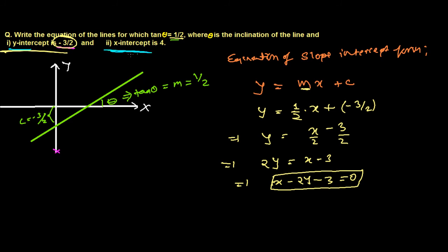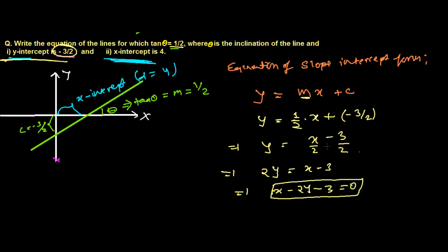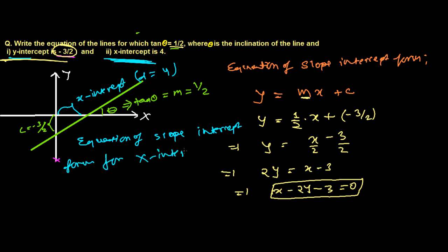Now if we have x-intercept 4, what will be the equation of the line? Let d equals 4. When we have x-intercept, the equation of the line is y equals m times x minus d. So the slope-intercept form for x-intercept is y equals m times x minus d.